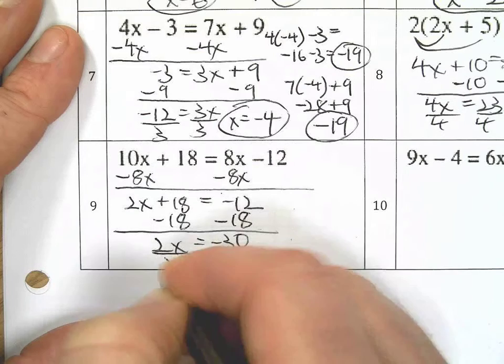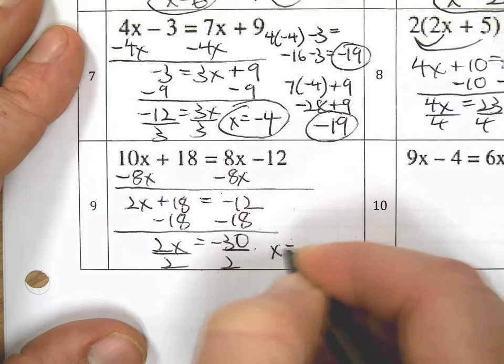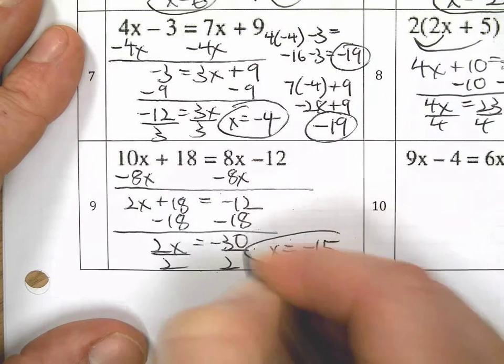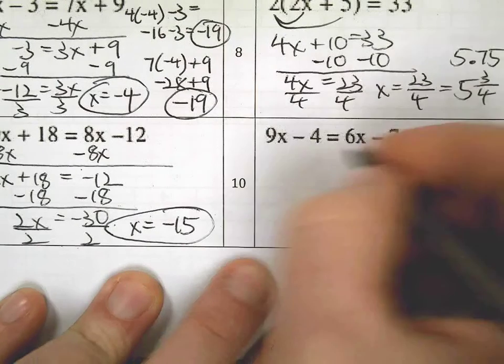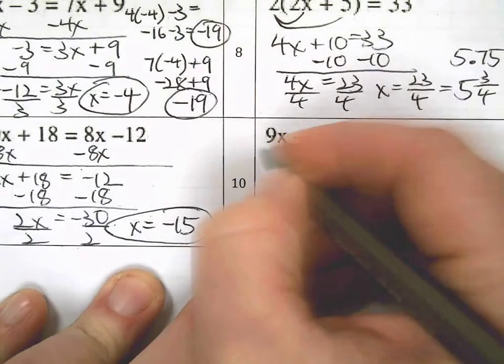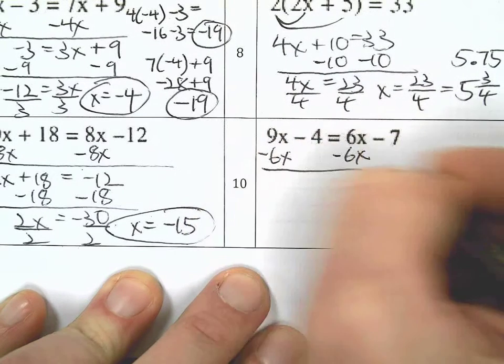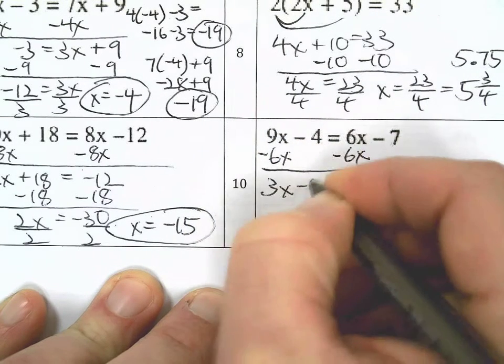2x is negative 30. Guess what? x equals negative 15, right? Do the proof. Let me know if that's right. Post a comment if it's not. Please, I don't want to post bad information.